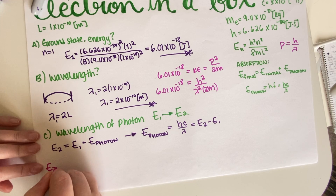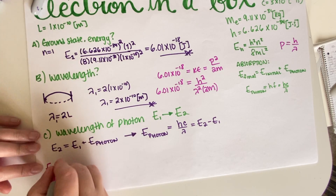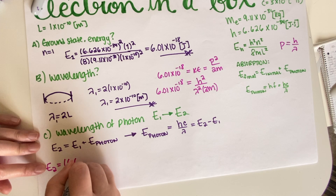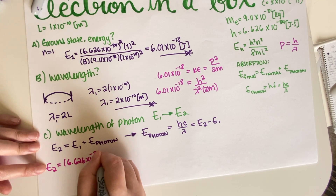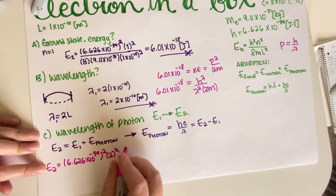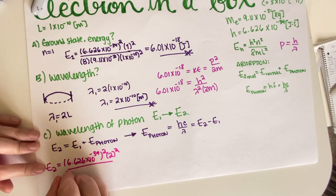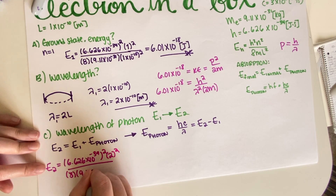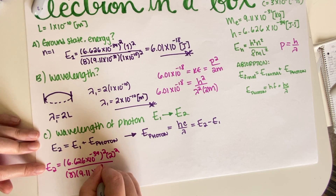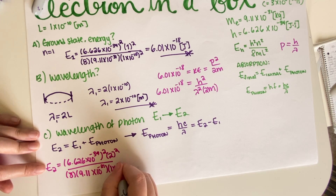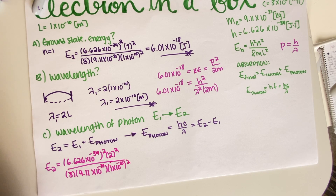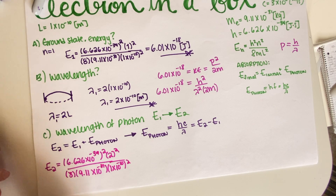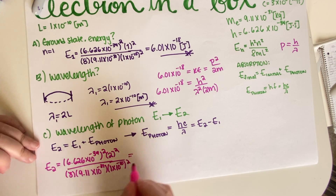For E₂: using h = 6.626 × 10⁻³⁴, n² = 4 (since n = 2), m = 9.11 × 10⁻³¹, and L = 1 × 10⁻¹⁰ in the formula E₂ = h²n²/(8mL²).